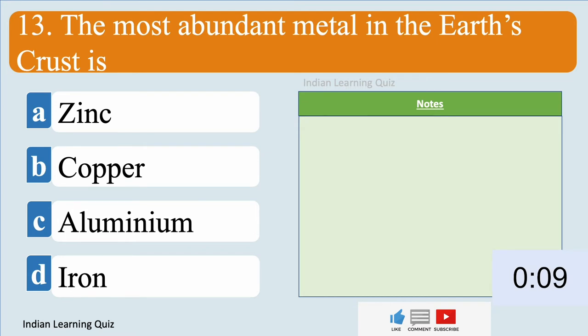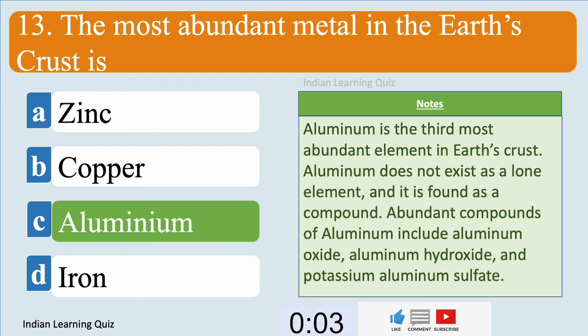The most abundant metal in the Earth's crust is aluminum.